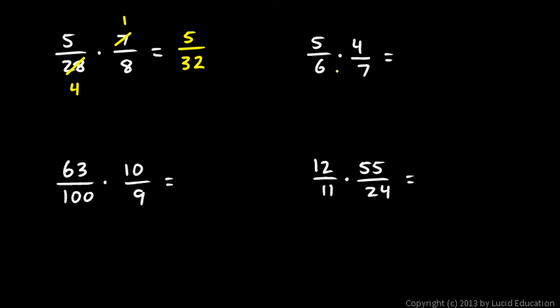Over here, let's see, I notice a 4 and a 6 are both divisible by 2. So let's divide each of those by 2. The 4 divided by 2 is 2, and 6 divided by 2 is 3, and that's about all I can do. 5 times 2 gives me 10, and 3 times 7 is 21.